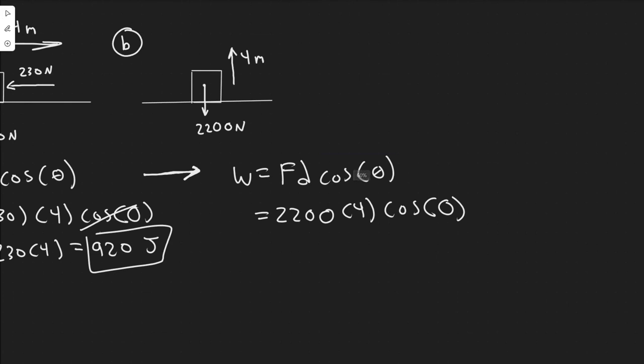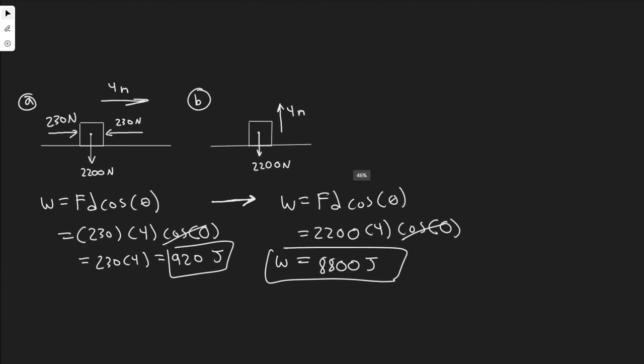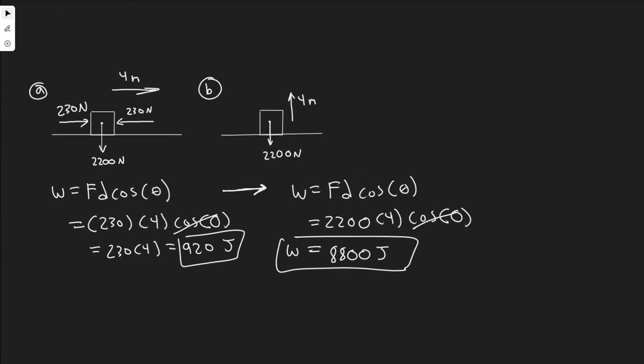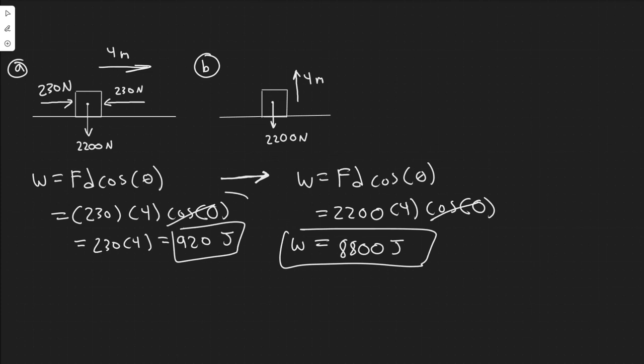So obviously this is just 1 again. So 2200 times 4 is 8800. So 8800, and then work again is measured in joules. So you have 920 joules and 8800 joules. So this would be your answer for B. This right here is your answer to A. And yeah, so the main takeaway from this problem is just the formula for work and understanding the angle. So yeah, so these are your answers, and hopefully you found this useful.